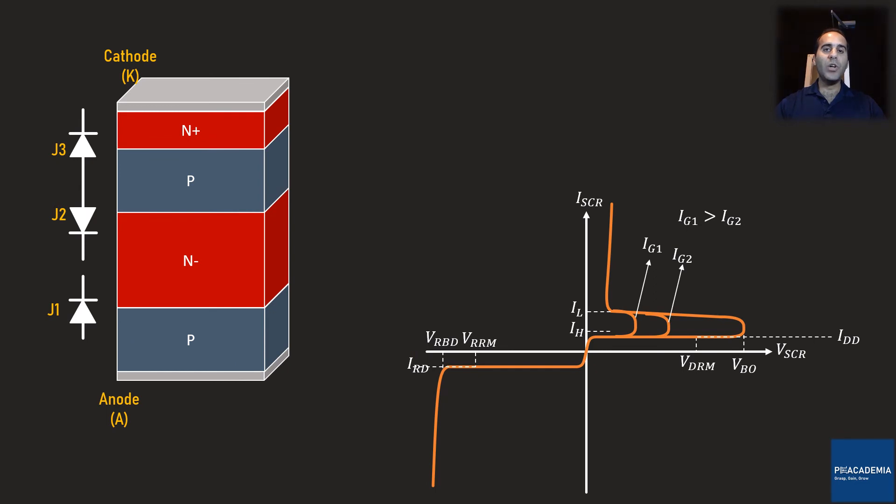You may ask what is the point to have such a device that requires a very large forward voltage to turn on. Is there any application for it? I agree with you in this regard since we cannot find many applications for such a device. So, the question is what can we do to turn on the device at a smaller forward voltage? To do so, I need to add an ohmic contact to the top P semiconductor. I call this ohmic contact the gate. This device with the gate is called the thyristor or SCR.